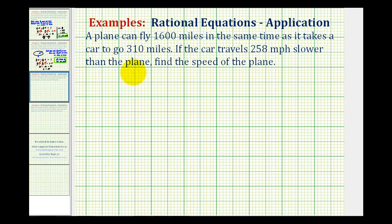A plane can travel 1,600 miles in the same time it takes a car to go 310 miles. If the car travels 258 miles per hour slower than the plane, find the speed of the plane.